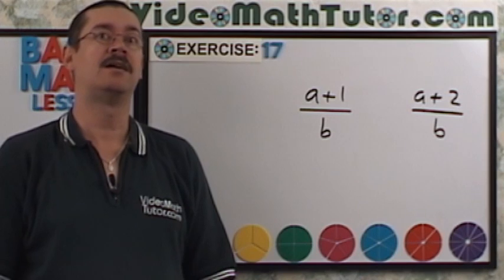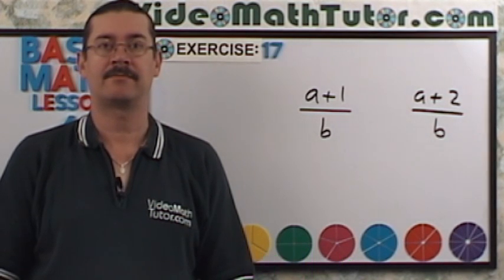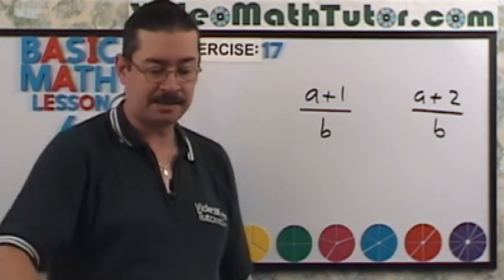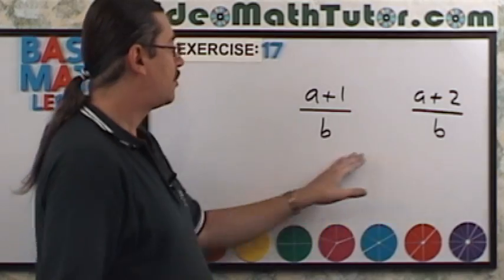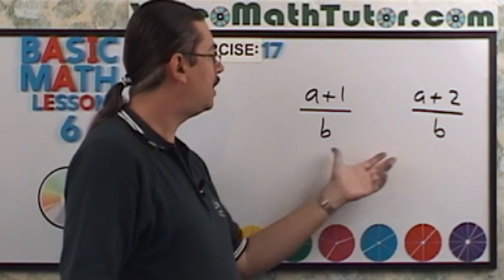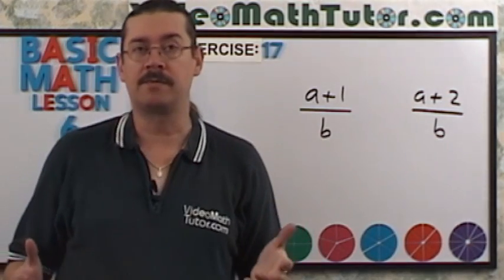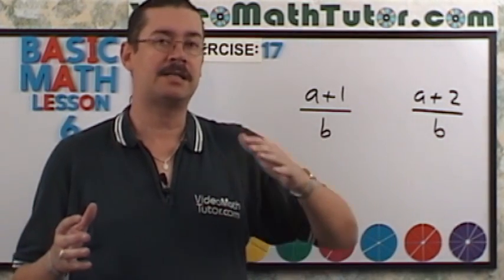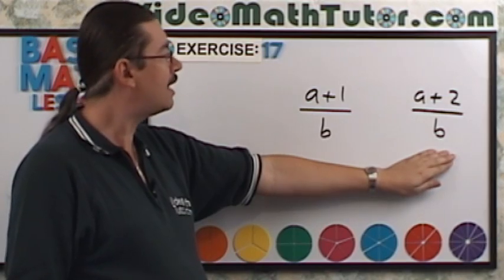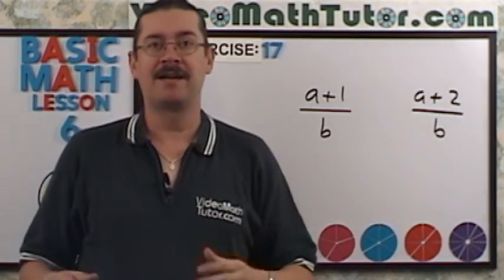Exercise 17 asks which of these two fractions is larger. The denominators are the same and the numerators are increased. The rule: if the denominator is the same, as the numerator gets larger, the fraction gets larger — so the one with the larger numerator is the larger fraction. If you get stuck, plug in actual numbers like 3s and 5s and it's easy to compare.